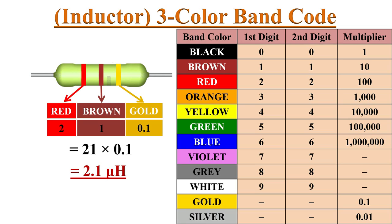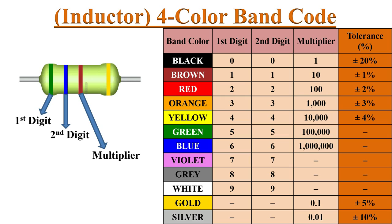Mostly three-color-band inductors have a tolerance value of plus or minus 20%. If there are four color bands printed on an inductor, the first and second bands represent digit values, the third band is the multiplier, and the fourth color band indicates tolerance in percentage as shown in the table.